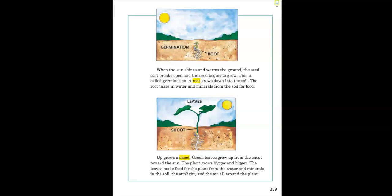When the sun shines and warms the ground, the seed coat breaks open and the seed begins to grow. This is called germination.